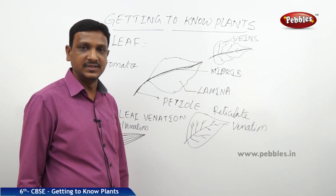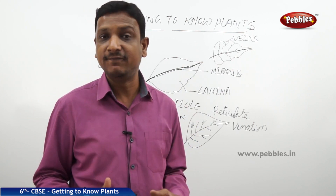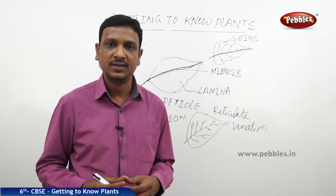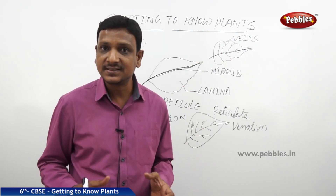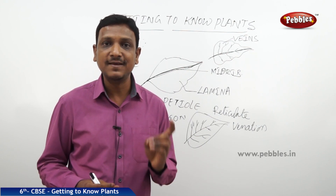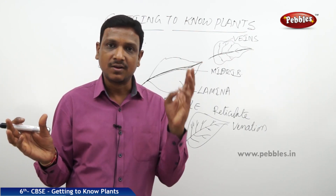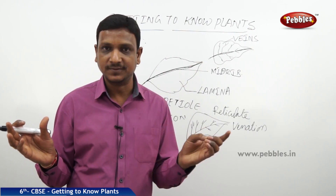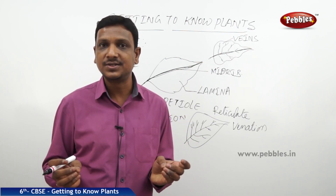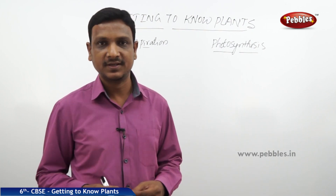Now let us see the functioning of the leaf. The major function of the leaf is to prepare food for the plant. The leaf is the food factory of the plant because food is manufactured there. The leaf uses sunlight, carbon dioxide, and water — with these three ingredients a leaf can make food in the form of glucose. Let us see whether these three are really important to the leaf to make food.